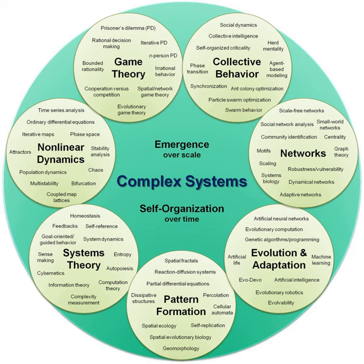The interacting components of a complex system form a network, which is a collection of discrete objects and relationships between them, usually depicted as a graph of vertices connected by edges. Networks can describe the relationships between individuals within an organization, between logic gates in a circuit, between genes in gene regulatory networks, or between any other set of related entities. Networks often describe the sources of complexity in complex systems, enabling many useful applications of graph theory and network science.